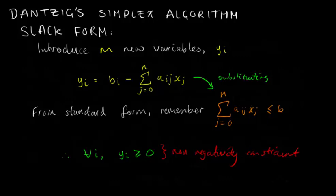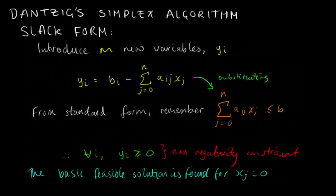Secondly, if we set the values for our original variables to zero, we can obtain a solution to the system, from which we can start traversing towards the optimal solution. This is called the basic feasible solution.